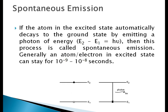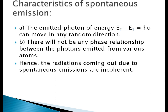Spontaneous emission: the excited atom in the excited state automatically decays to the ground state by emitting a photon of energy E2 minus E1, equal to h nu. This process is called spontaneous emission. Generally, an atom or electron in an excited state can stay for 10 to the power of minus 9 to 10 to the power of minus 8 seconds, after which it de-excites to the ground state on its own.